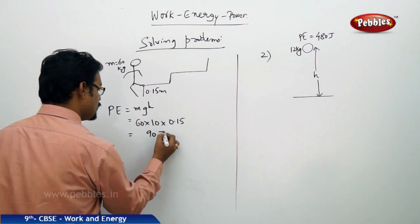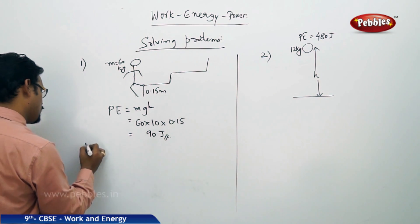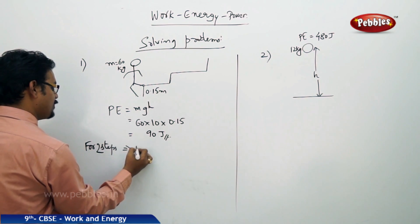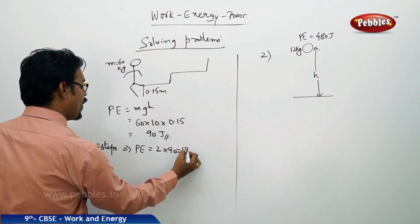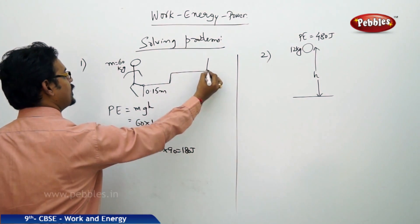But it is only for one step. For two steps, potential energy equals 2 into 90 which is 180 joules. So he is consuming 180 joules.